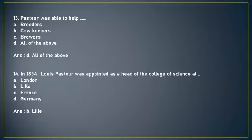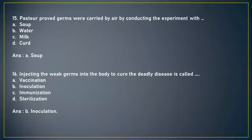Next question: Pasteur proved germs were carried by air by conducting an experiment with (A) soup, (B) water, (C) milk, or (D) curd. The correct answer is option A, soup. Next: Injecting weak germs into the body to cure a deadly disease is called (A) vaccination, (B) inoculation, (C) immunization, or (D) sterilization. The answer is option B, inoculation.